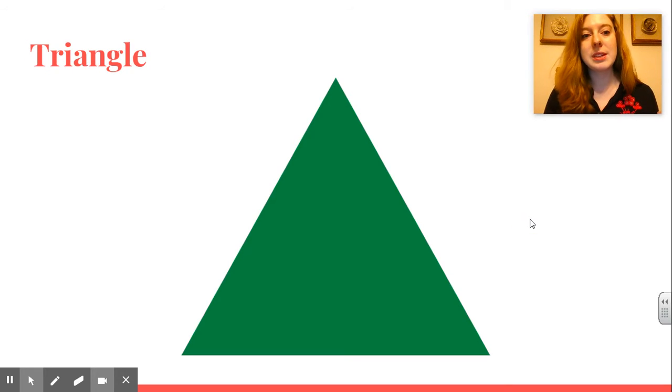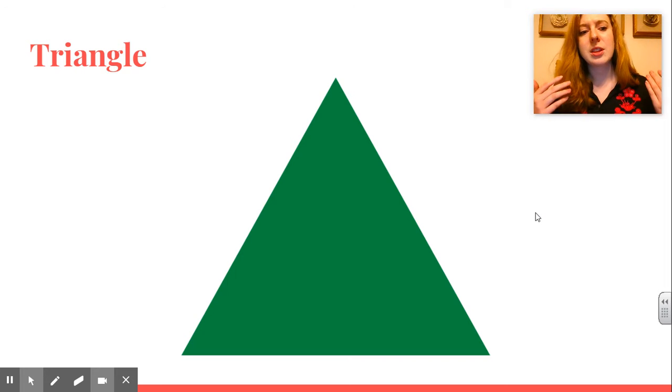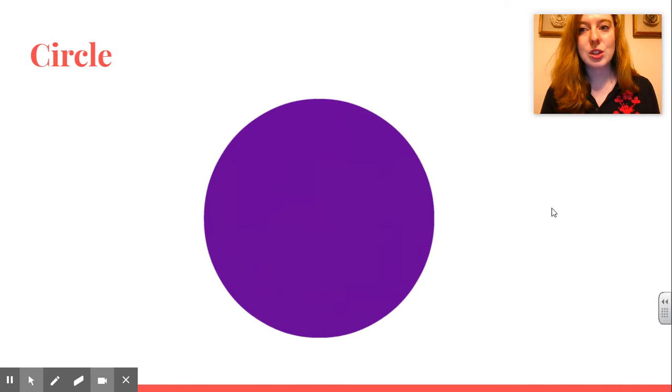This shape is called a triangle. Triangle. And this is very close to the Spanish word. If you speak Spanish, the Spanish word is trianglo. This is triangle. Circle. This is a circle.